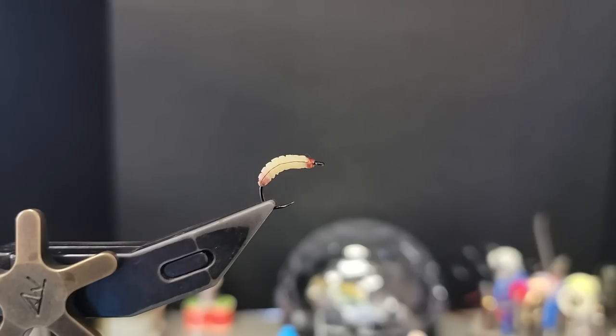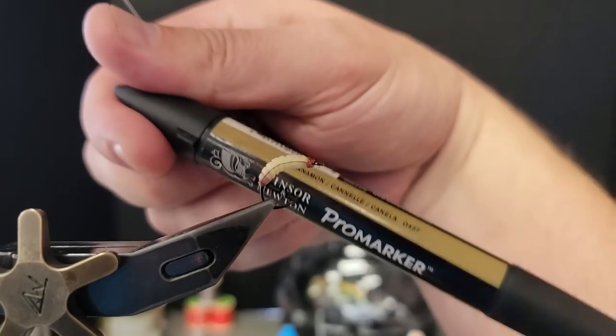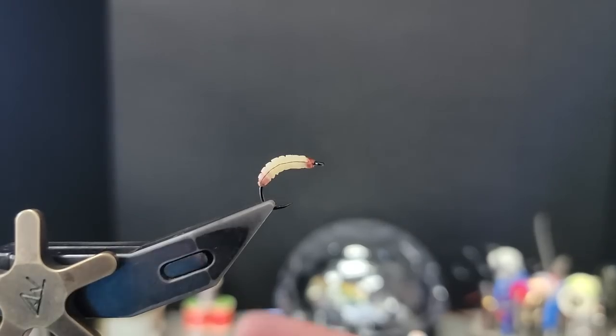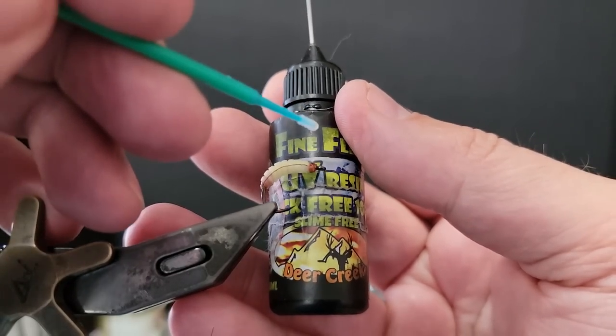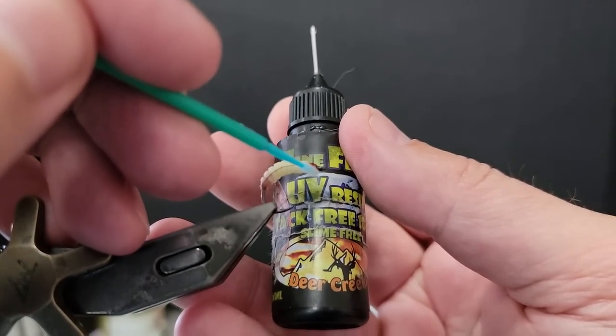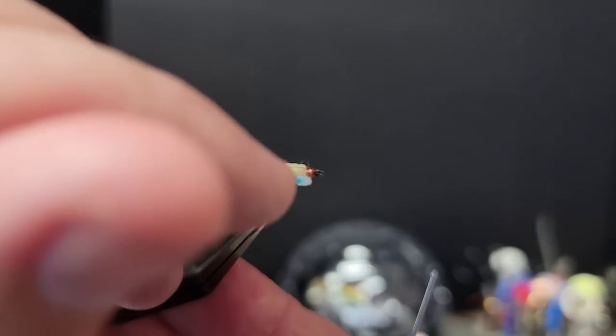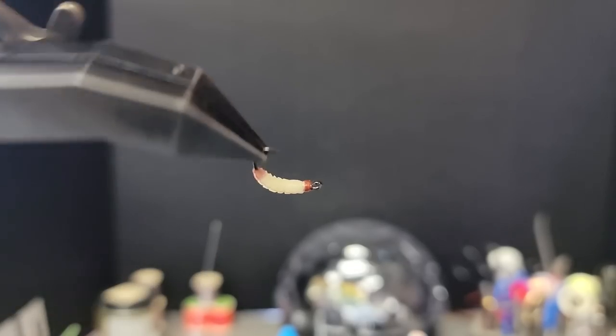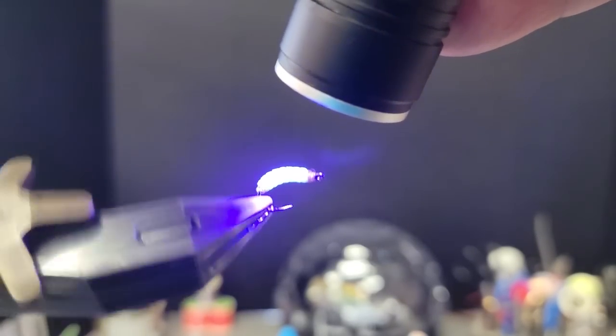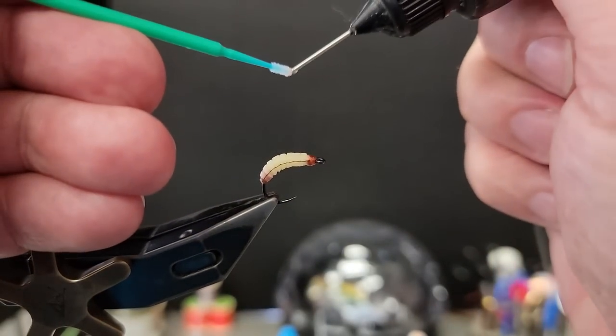A little more marker to your liking. I use this one, cinnamon. And then we're using the best resin in my opinion, which is the Deer Creek, and this is the flex. And then we'll coat the whole bug.